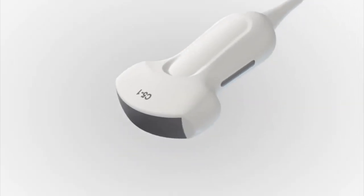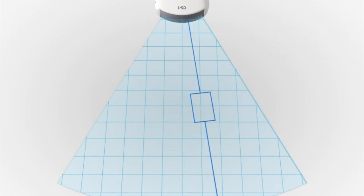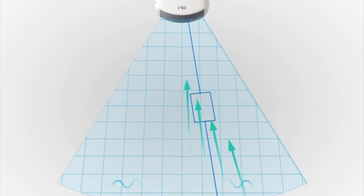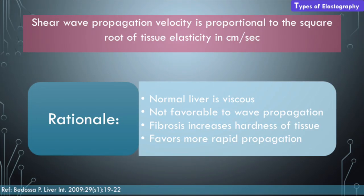In ultrasound, we use the shear wave technique which gives a quantitative analysis of fibrosis. First, an induction pulse passes through the tissue and generates shear waves perpendicular to it. These shear waves disperse through the tissue, and then a detection pulse helps detect the rate of progression of the shear waves — in other words, the velocity of the shear waves in the tissue. This is very similar to dropping a stone in water: the stone is your induction pulse, the ripples are the shear waves, and we detect the velocity of those ripples. Normally the liver is a viscous tissue not favorable to wave propagation, but when fibrosis sets in, the tissue becomes hard and there is rapid progression of waves through it.